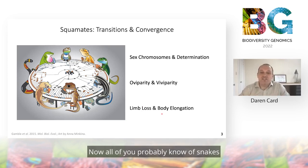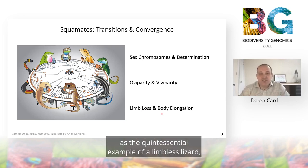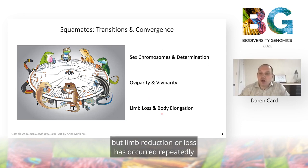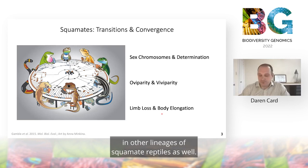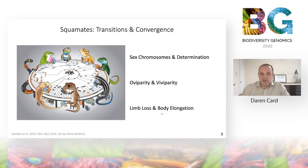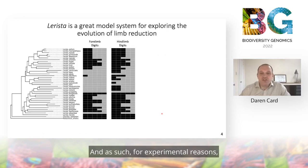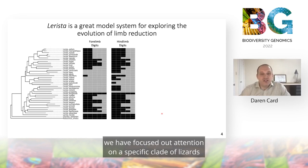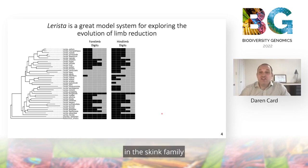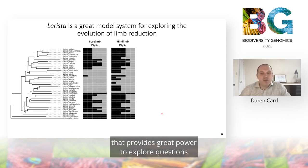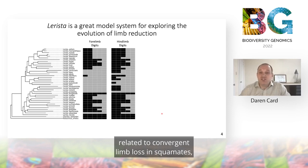All of you probably know snakes as the quintessential example of a limbless lizard, but limb reduction or loss has occurred repeatedly in other lineages of squamate reptiles as well. For experimental reasons, we have focused our attention on a specific clade of lizards in the skink family that provides great power to explore questions related to convergent limb loss in squamates.